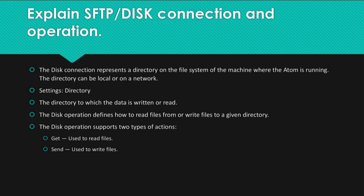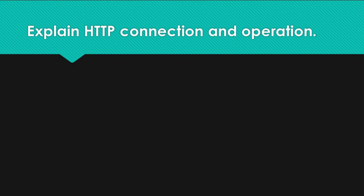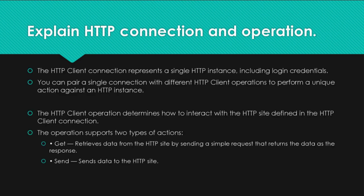Question: Explain HTTP connection and operation. Answer: The HTTP client connection represents a single HTTP instance, including login credentials. You can pair a single connection with different HTTP client operations to perform a unique action against an HTTP instance. The HTTP client operation determines how to interact with the HTTP site defined in the connection, supporting two types of actions: Get (retrieves data from the HTTP site by sending a simple request that returns the data as the response) and Send (sends data to the HTTP site).